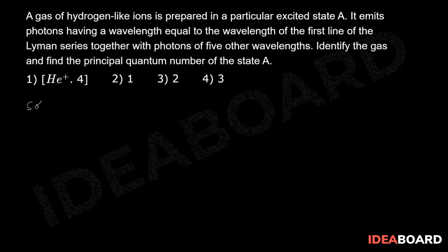Dear students, from the question it is given that the total number of photons emitted is six, which means that the number of spectral lines observed equals six.